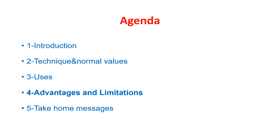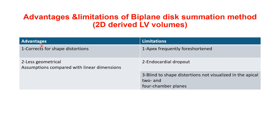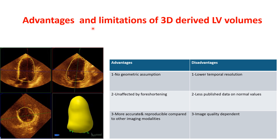Advantages and limitations: the biplane Simpson method corrects for shape distortion and involves fewer geometric assumptions compared to linear dimensions. Limitations include frequent foreshortening of the apex, endocardial border dropout, and being blind to shape distortions not visualized in the apical 2- and 4-chamber views. For 3D-derived volumes, advantages include no geometric assumption, being unaffected by foreshortening, and greater accuracy and reproducibility. Disadvantages include lower temporal resolution, less published normative data, and image-quality dependence.